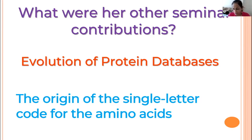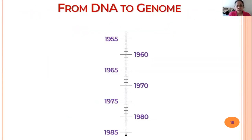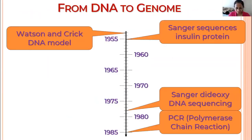I learned all these stories from people who worked with her who are still at Georgetown. So from that, where did we head? 1950s — and of course you all know about Watson and Crick. Without Watson and Crick, we won't be here today.